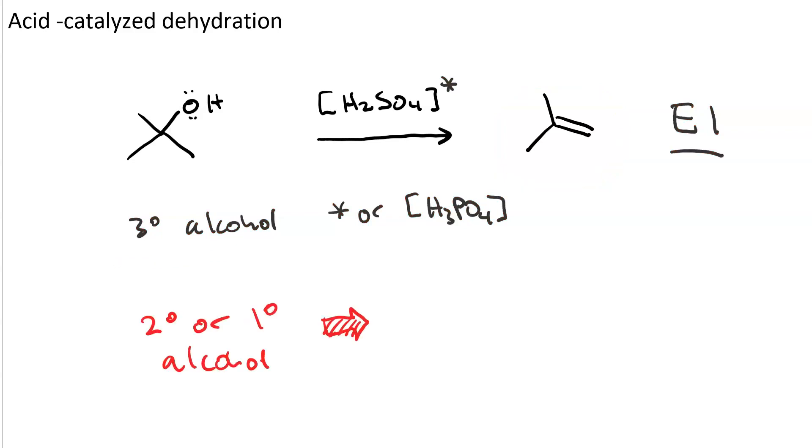Now note, if our substrate was a primary or secondary alcohol, we'd first have proton transfer. And then we'd get E2, which means we'd have proton transfer and loss of the leaving group to make the alkene in the same step.